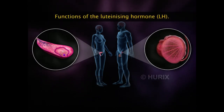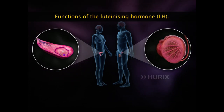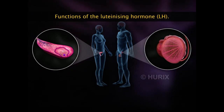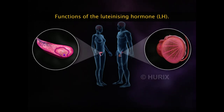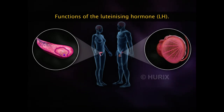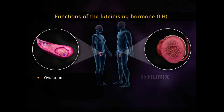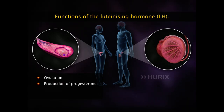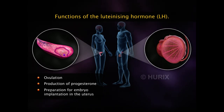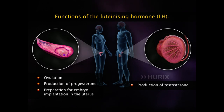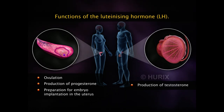The other gonadotropin hormone is the luteinizing hormone, LH. In females, a mid-cycle surge of luteinizing hormone LH causes ovulation. LH promotes the production of progesterone after ovulation and thus prepares the female body for implantation. In men, LH is responsible for the production of the hormone testosterone by the Leydig cells of the testes.